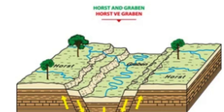Overall, Horsts and Graben formation is a result of the complex interplay of tectonic forces and the geology of the underlying rocks. The creation of these features can have a significant impact on the topography and landscape of an area, and studying them can help geologists better understand the geological history of a region.